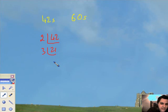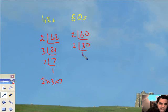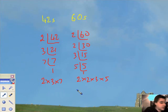2's into 42, 21. 3 goes into there 7 times. 7 goes into there once, landed. 2 times 3 times 7. Now, same with the 60. 2 goes into 60, 30 times. 2 goes into 30, 15 times. 3 goes into 15, 5 times. 5 goes into 5 once. I've got 2 times 2 times 3 times 5. It doesn't say I've got to use index notation. That's not what the question's about.